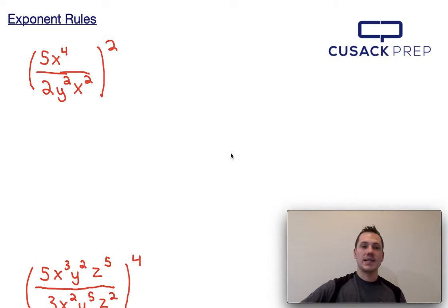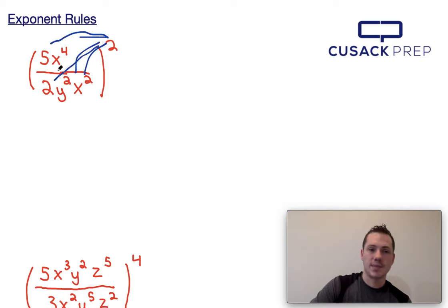For exponent rules, a little bit more complicated than the previous video, we can see that we have an expression here that's being raised to another power. Now, when we have exponents raised to exponents, we know we multiply, but when we have this many variables and numbers inside, we have to distribute the two to every single one of the other exponents.